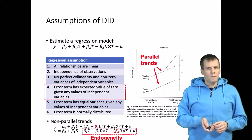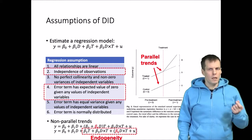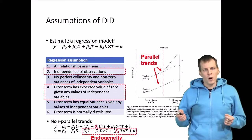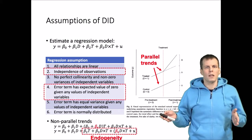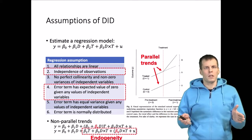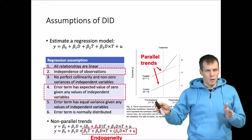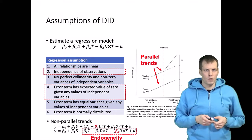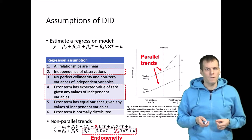There is also a second violated assumption: independence of observations. We measure each person twice — before and after treatment — and causes of the dependent variable persist over time. Two scores from the same individual will be more similar to each other than scores from two different individuals, violating the independence assumption. These are the two critical assumptions in difference in differences.